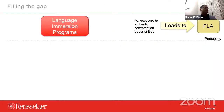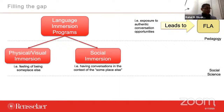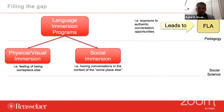This is the gap I see in the education domain, and I want to use computer science to help. In the pedagogy field, language immersion programs — going to a different country — give you all those exposures to authentic conversational opportunities and lead to foreign language acquisition. Social scientists break this down into physical or visual immersion, which means you actually feel as if you're in some other place, and social immersion, which means you're having social conversations in that other place.